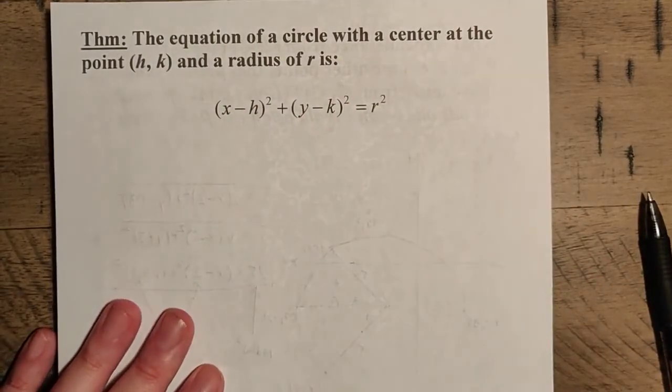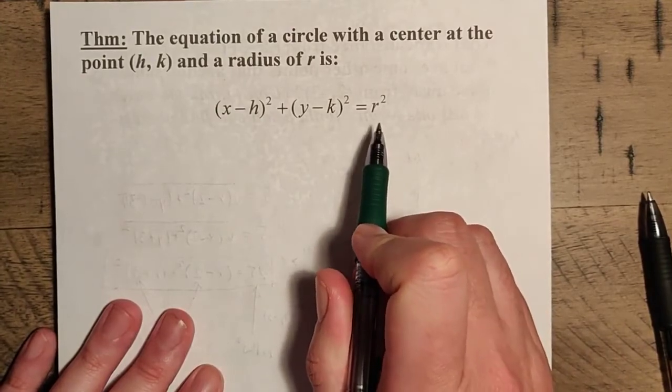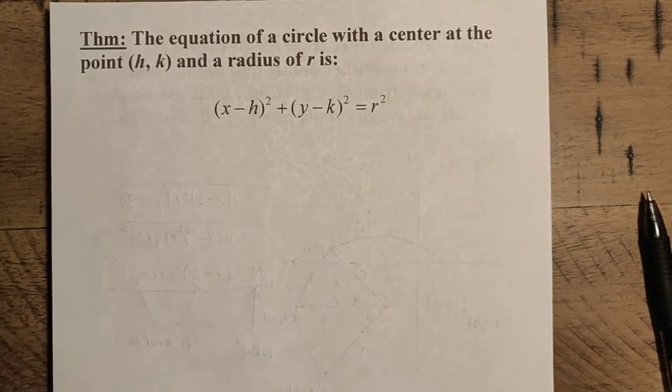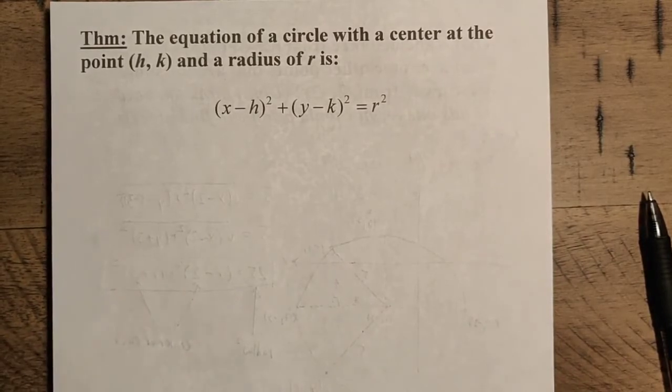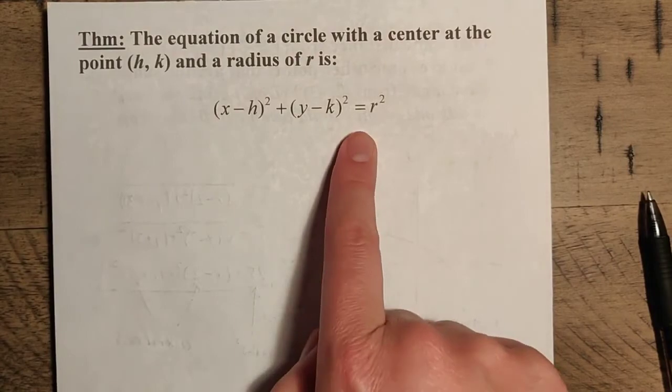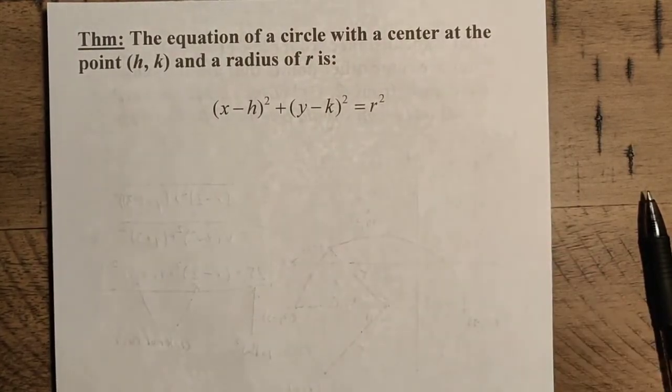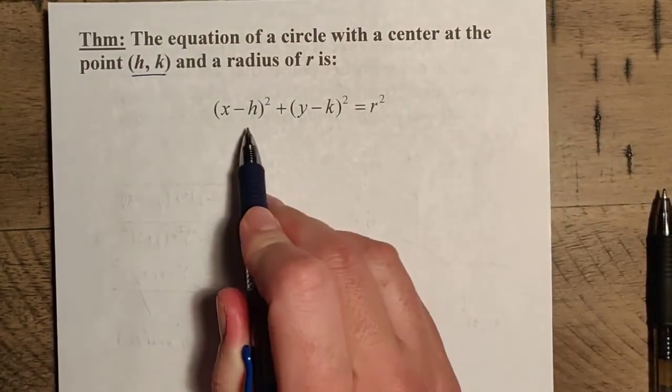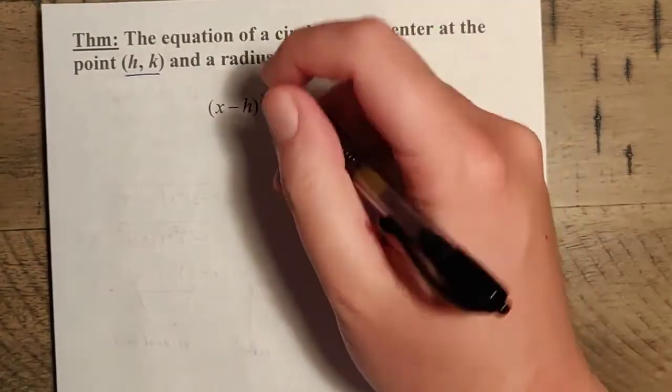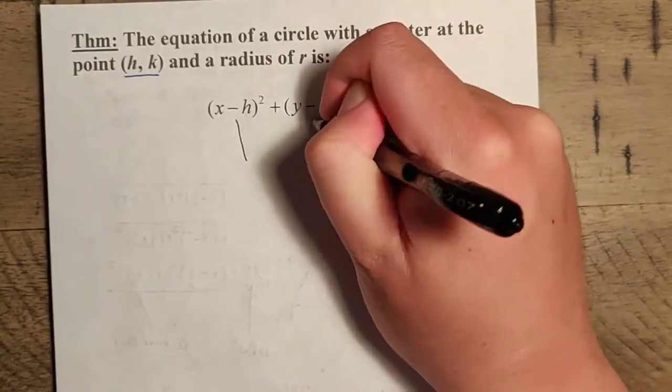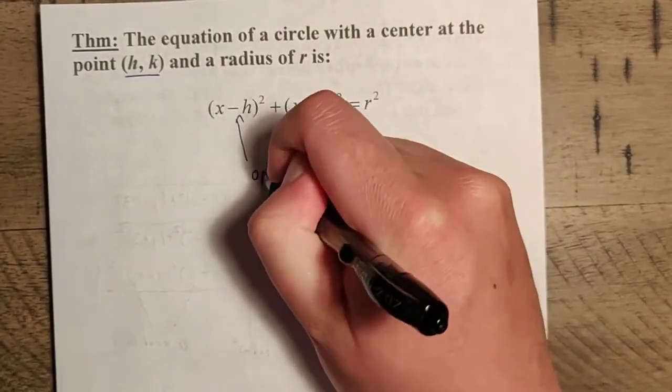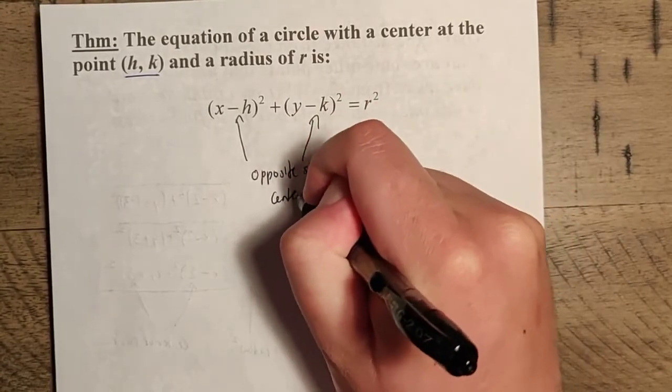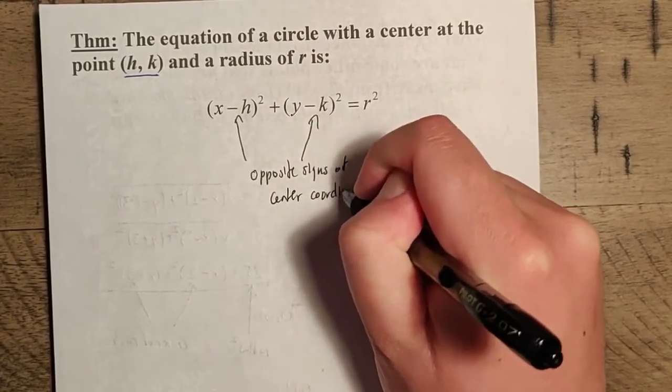Now, a couple things to note about this. First off, remember it's the radius squared, okay? It's not just the radius, it's the radius squared. This is a necessity that comes from the distance formula. With the distance formula, we had a square root over this entire thing, so we had to square both sides to remove it. Secondly, note that we have h comma k, and then we have a minus h and a minus k here. So the most important part about these is that these are going to be opposite sides of the center coordinates.